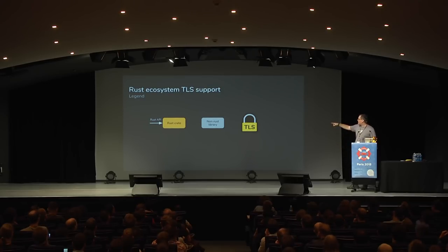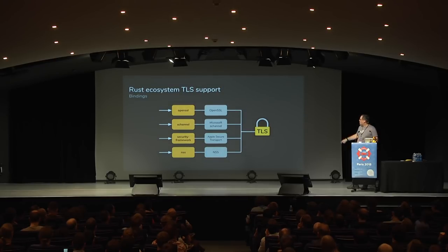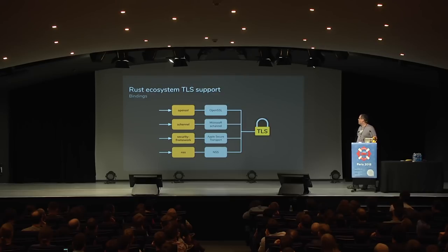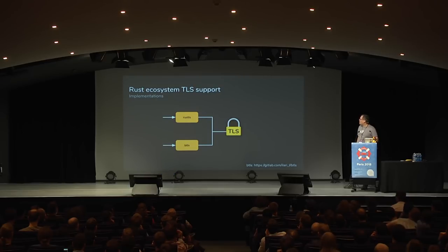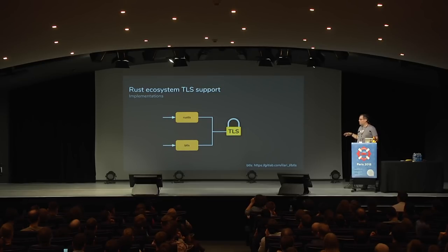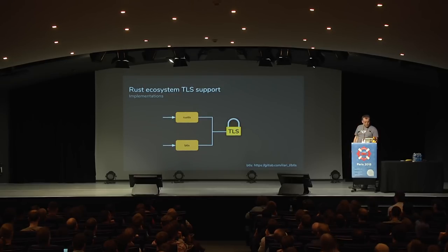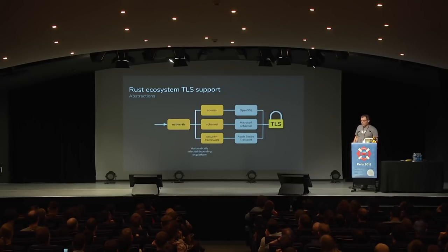Now for Rust: in the diagram, orange boxes are crates, gray boxes are other libraries, white arrows are useful Rust APIs. We have OpenSSL, SChannel, Security Framework, and NSS bindings. There's also Btls — not widely known but very interesting, more in scope like OpenSSL, mostly written in Rust, and not on crates.io.